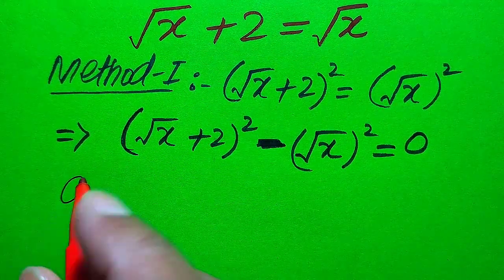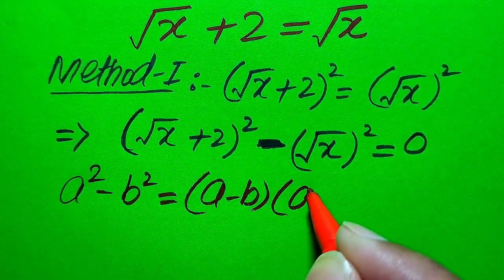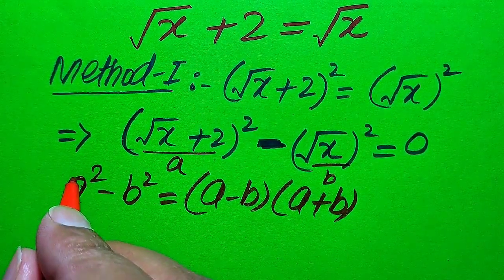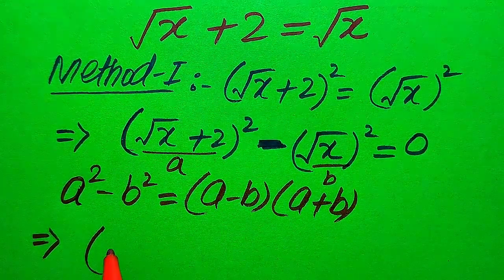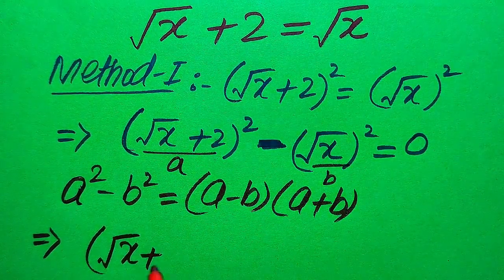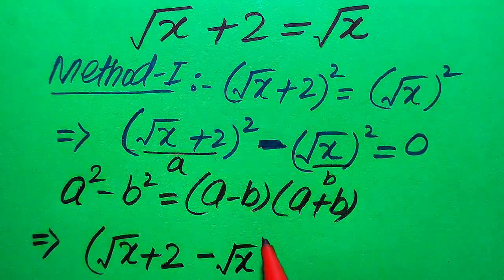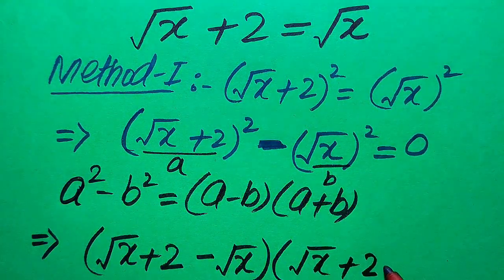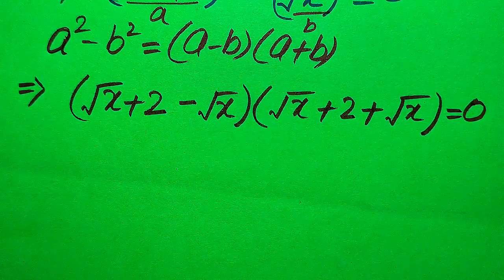Now we use the algebraic formula: a squared minus b squared equals (a minus b)(a plus b). Here the base of the first term is our a, and the base of the second term is our b. So according to this formula, we write our equation as: (square root of x plus 2 minus square root of x) times (square root of x plus 2 plus square root of x) equals zero.